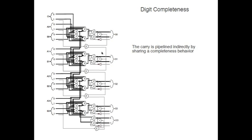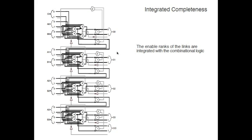That optimized version has fewer gates and fewer transitions. In the final version, we merge the completeness rank with the combinational logic — where before we had an enable rank of a link, now it becomes the enable rank of the link and also the combinational logic. This is the completeness for the sum, this is the completeness for the carry, but now this is also the enable rank for the carry and the combinational logic for the carry.